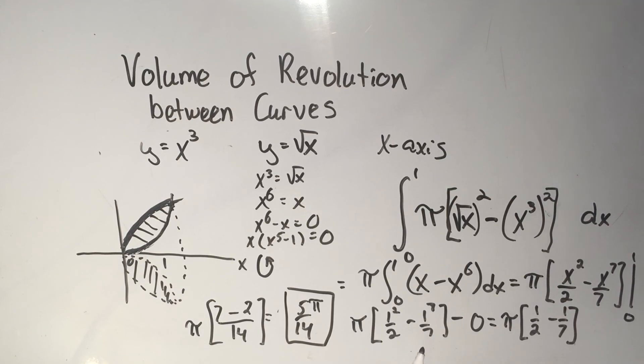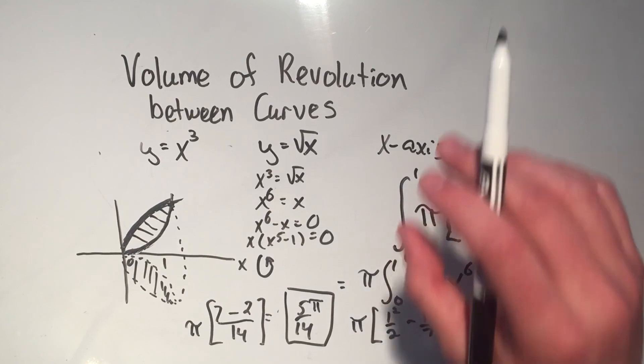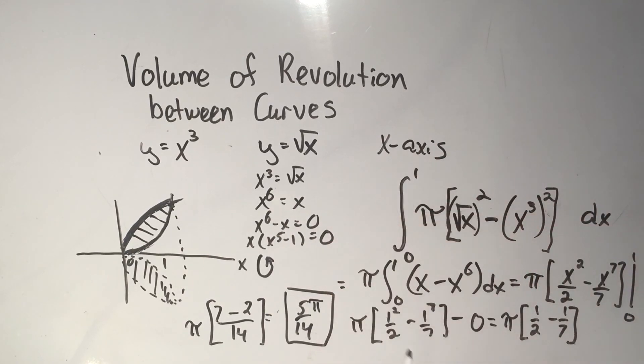And that's how you do volumes of revolution problems between two curves. You just have to remember, it's the top minus the bottom, or the left minus the right. And the same principle applies to the cylindrical shell method. I just did it here with the cross section method. So I hope you got something out of this video, please like and subscribe. I put new videos up every single day. And I'll see you in the next video.